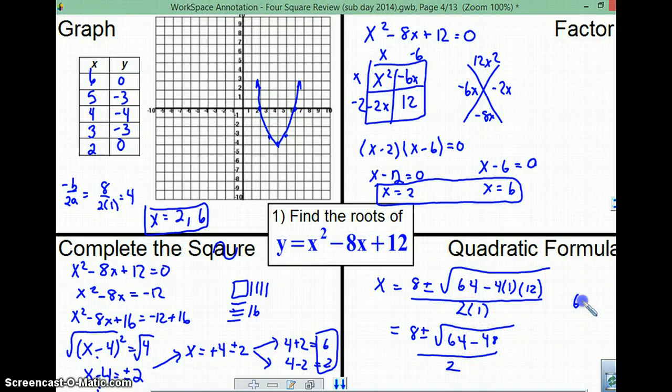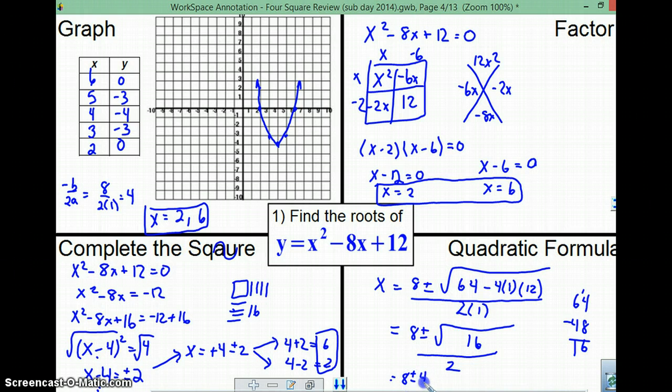We can do it over here. 64 minus 48. That's 16. Okay. I'm just going to erase because I'm running out of room. You end up with 16 right here. So, you end up with 8 plus or minus the square root of 16, which is 4 over 2.